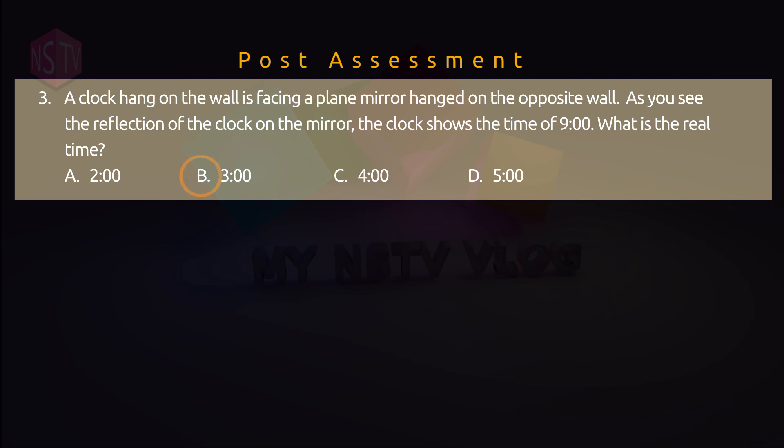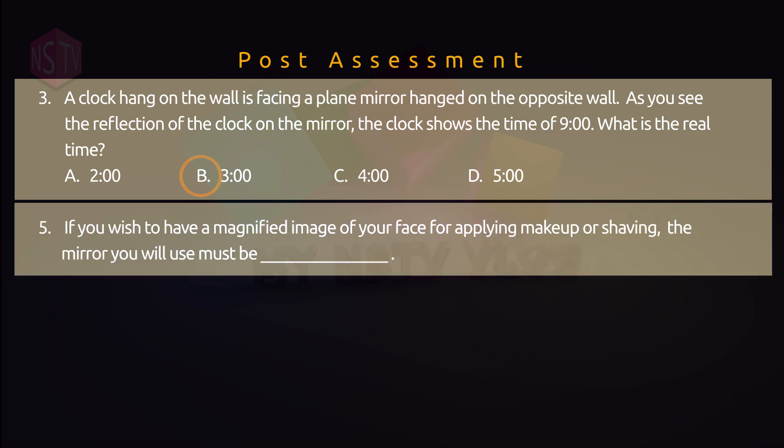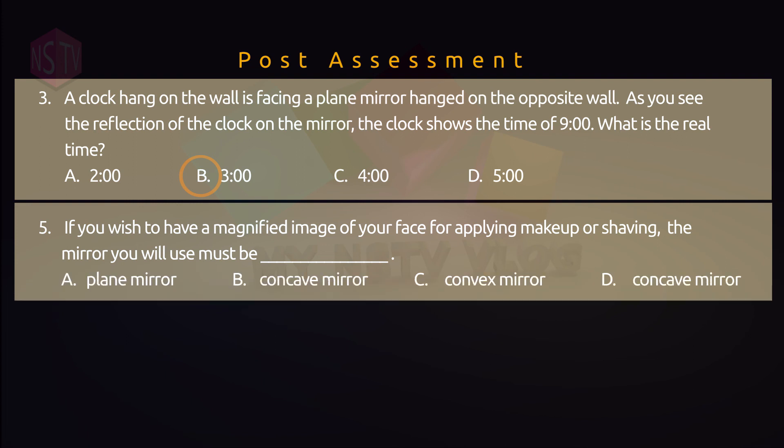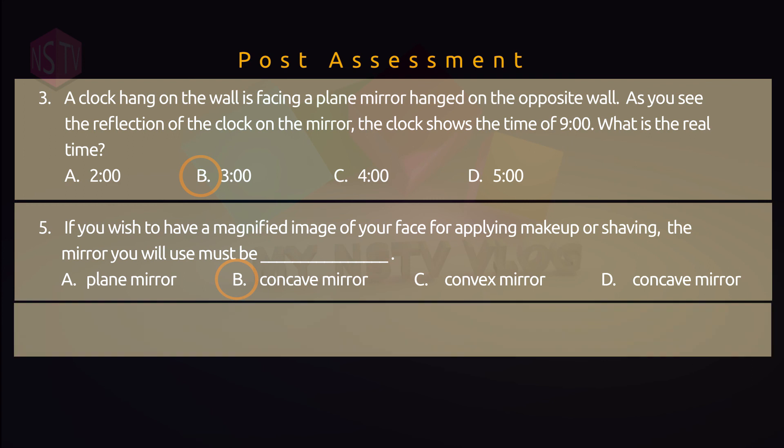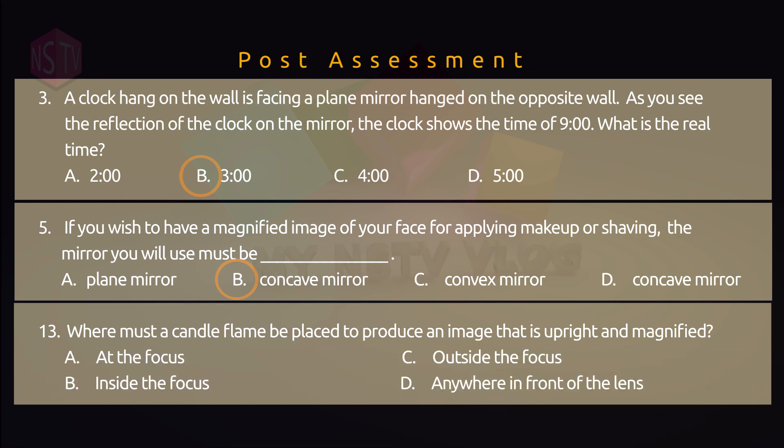So let's have the second one. Please refer to number 5 in your post-assessment. If you wish to have a magnified image of your face for applying makeup or shaving, the mirror you will use is blank mirror. The answer is concave mirror. You're doing great. So for the third question, please refer to number 13. Where must a candle be placed to produce an image that is upright and magnified? Let's check your answer. So it should be placed inside the focus. Did you get the correct answer? Very good.